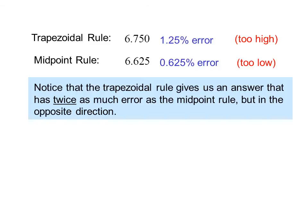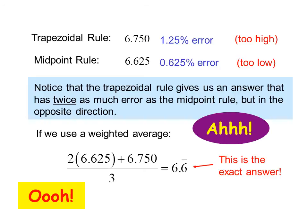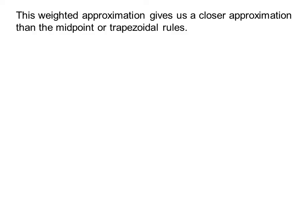Notice that the trapezoidal rule gives us an answer that has twice as much error as the midpoint rule, but in the opposite direction. If we use a weighted average, we have 2 times 6.625 plus 6.750 divided by 3, which equals 6.6 repeating. This is the exact answer. This weighted approximation gives us a closer approximation than the midpoint or trapezoidal rules.